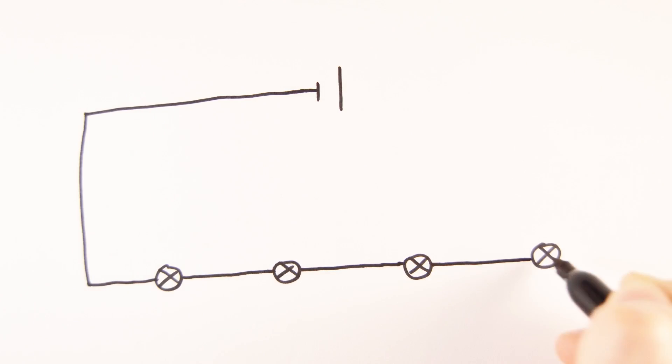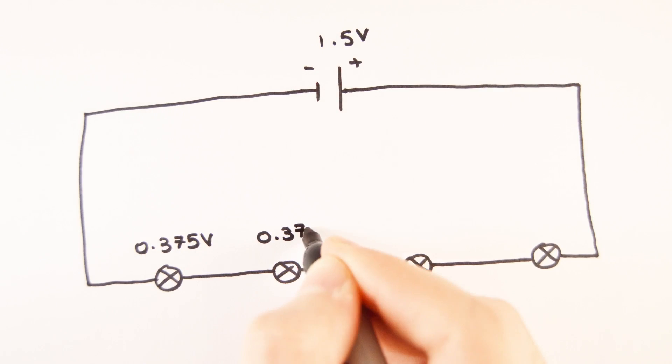When two or more components are connected in series, the same current flows through each component, but the voltage is shared through the components.